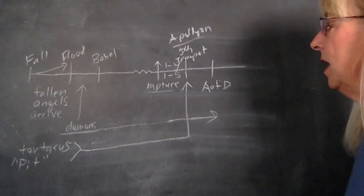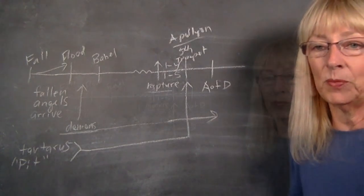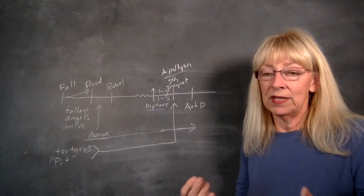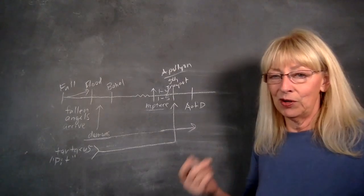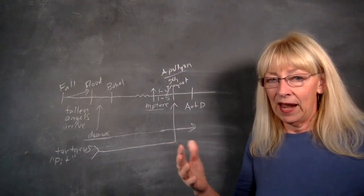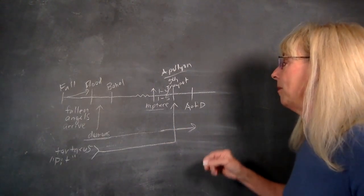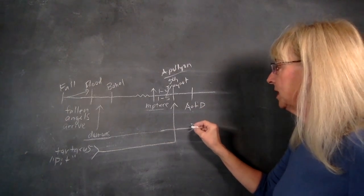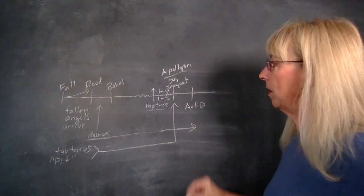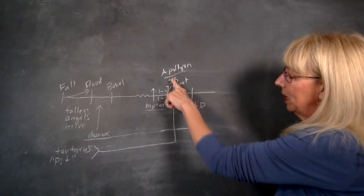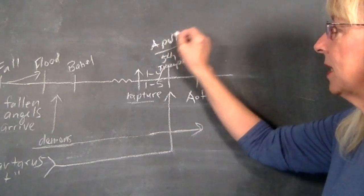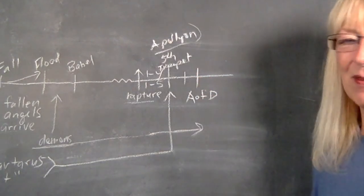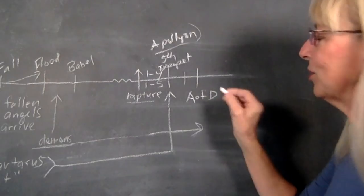This will begin at a time we know as the Abomination of Desolation, which is when the Beast is going to take his seat in the temple of God—a real temple that will be rebuilt. I believe the two witnesses are going to do that as part of their job when they make a visible appearance. At the time of the Abomination of Desolation, that's when the man of sin is going to be revealed. The pit will be opened, Apollyon is released, and it's the Beast who ascends from the bottomless pit who's going to kill the two witnesses.